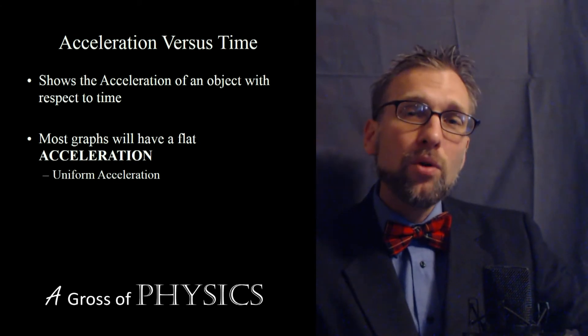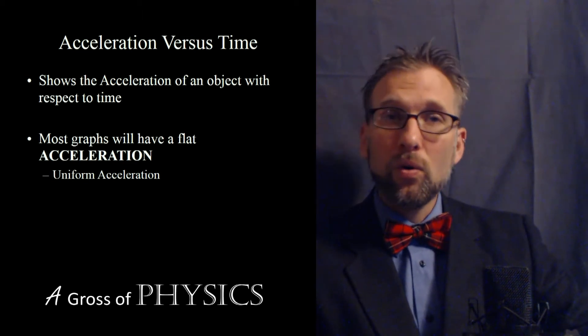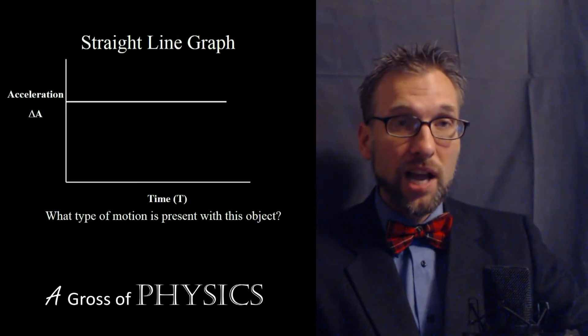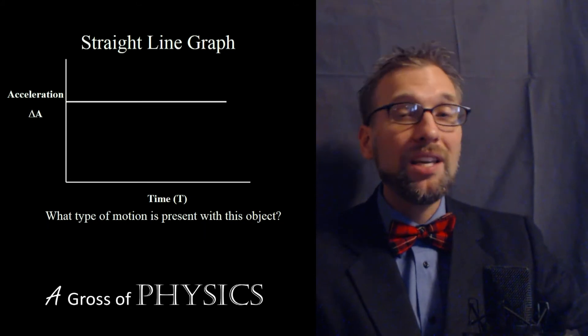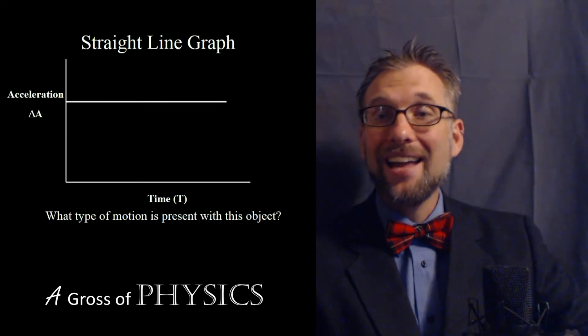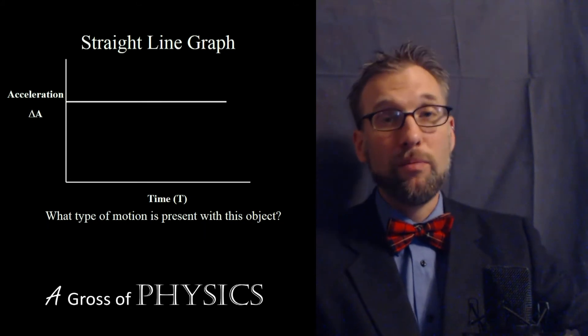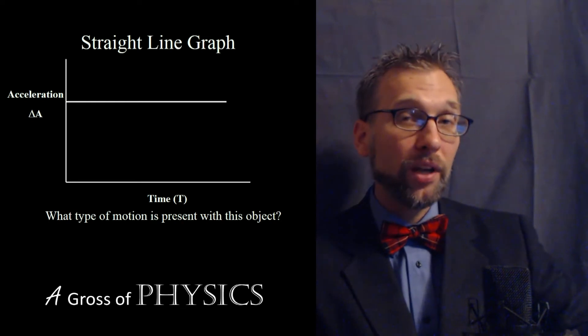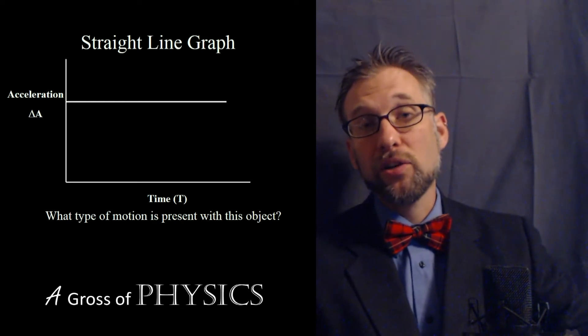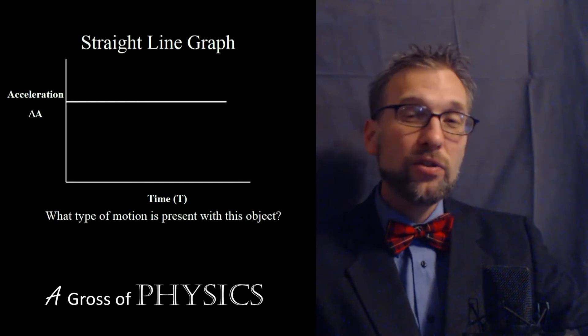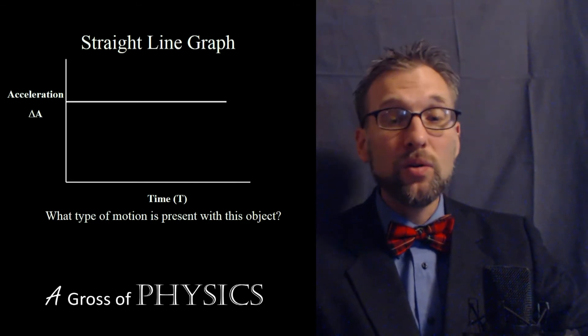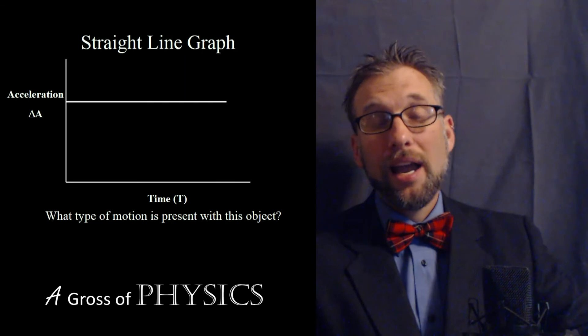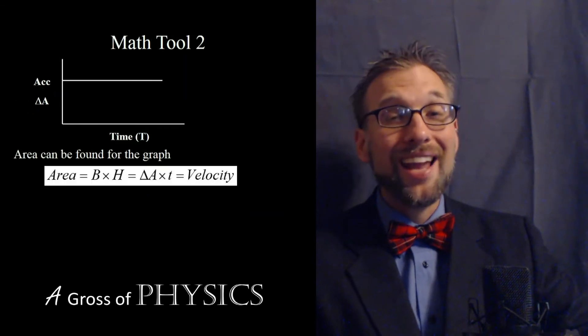So most of our acceleration versus time graphs, although they represent acceleration versus time, are going to be fairly easy to observe and not yield too much information. If we look at it quickly we'll know if it has a positive, a zero, or a negative acceleration. But other than that there's only one math tool that we can use to analyze it and that math tool is going to be the area.